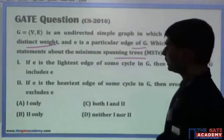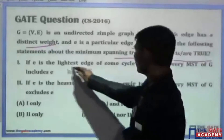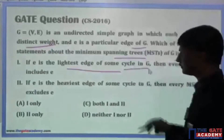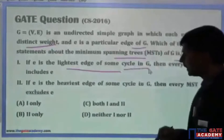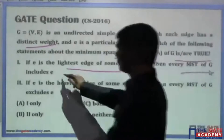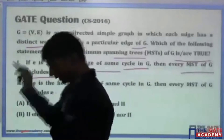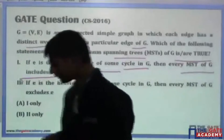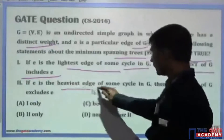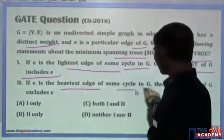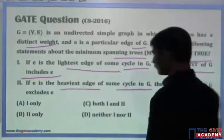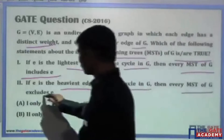The first statement: if E is the lightest edge of some cycle, then every MST of G includes E. The second statement: if E is the heaviest edge of some cycle in G, then every MST of G excludes E.